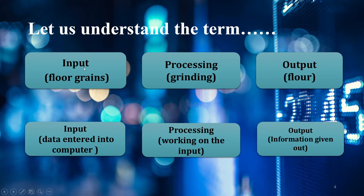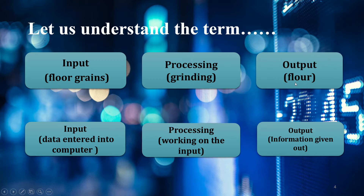Let's understand with an example of a flour grain machine. The flour grains are the input. When we put them into the machine, the processing happens — that means grinding or crushing inside the machine. The output is the flour that comes out. So input is the flour grains, processing is the grinding, and output is the flour. The same concept applies to a computer.